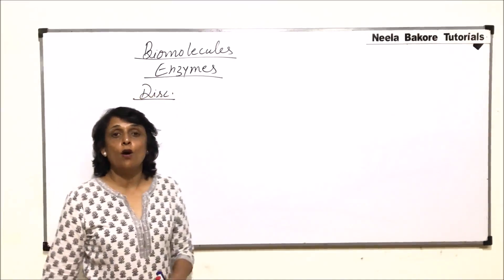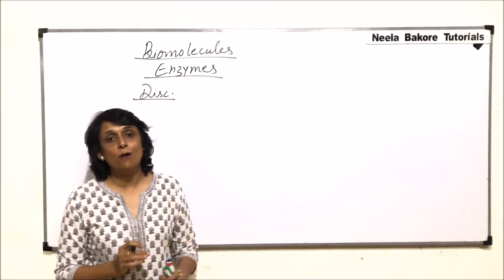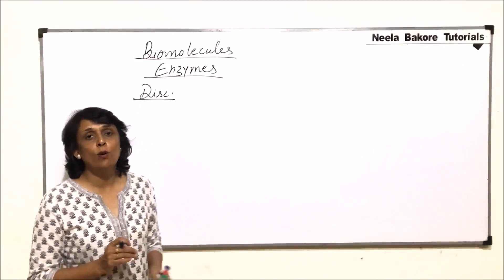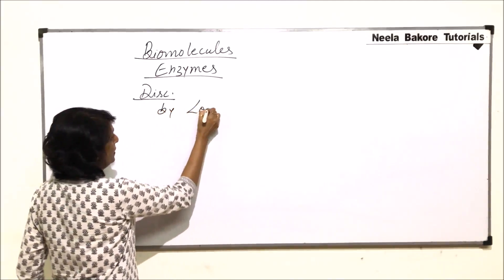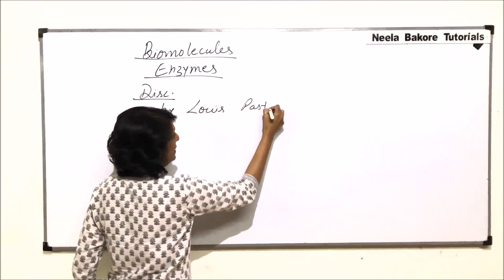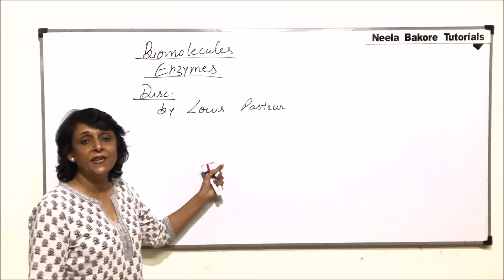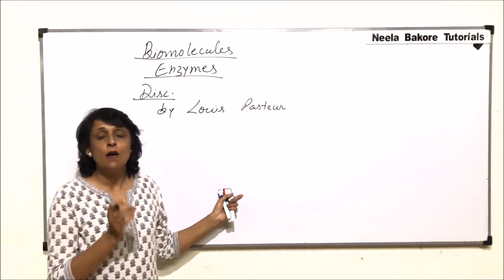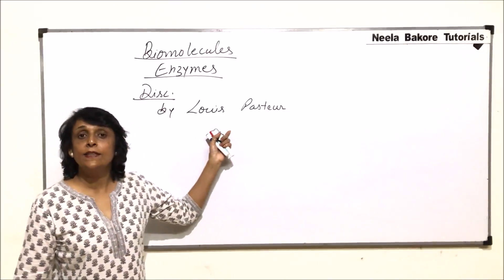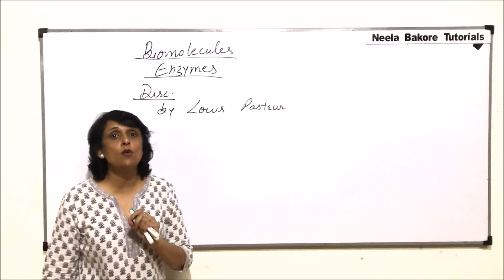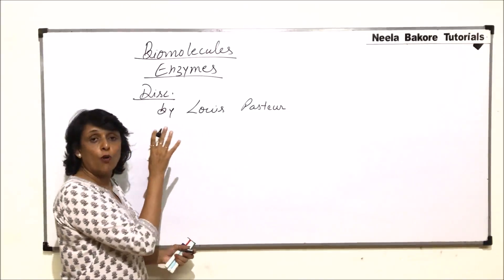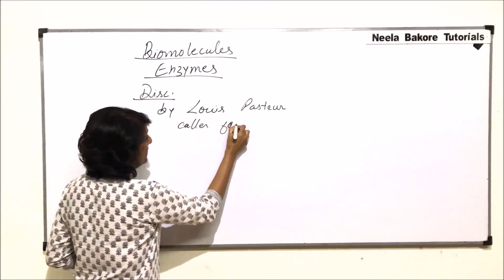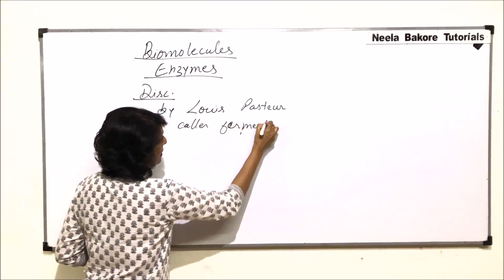The discovery of enzymes was made about 100 years ago through an experiment performed by Louis Pasteur. While performing this experiment, he found out that there are certain microbes responsible for fermentation reactions, and the substances involved in these reactions he called 'ferments.' So, what we know as enzymes today were called ferments by Pasteur.